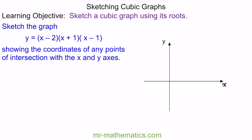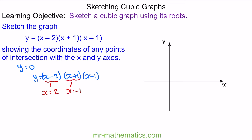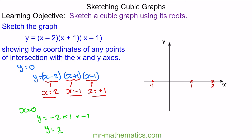We'll begin by finding the roots when y equals zero. Each bracket will equal zero, so x equals two, x equals negative one, and x equals positive one. We can mark these along the x-axis. For our intercept when x equals zero, we have y is negative two multiplied by one multiplied by negative one, so y is equal to positive two, which we can plot. Because we have a positive x cubed term, the cubic will look something like this.